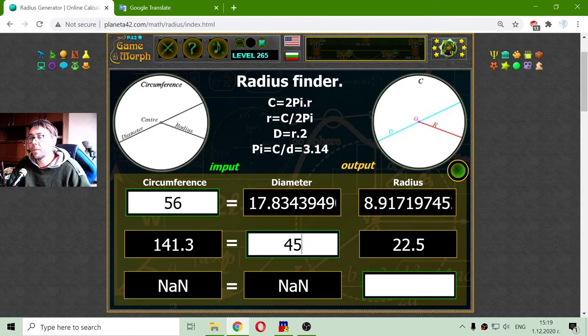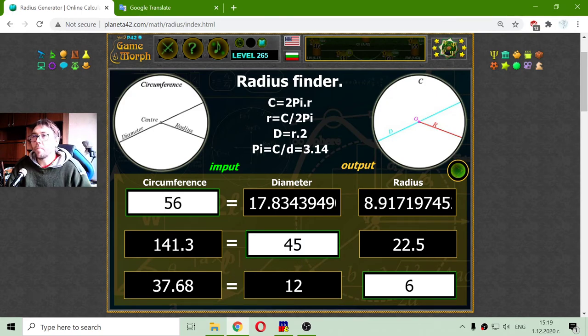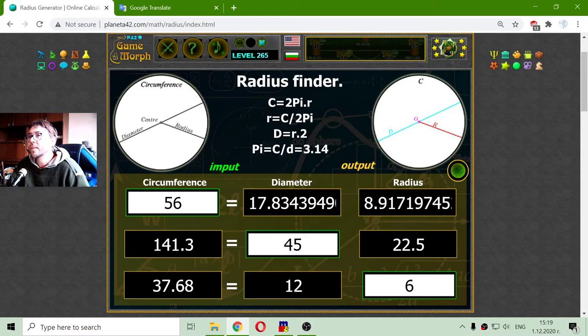And finally, if I have the radius, let's say radius of 6, the diameter should be 12 and the circumference should be 37.68. And those are the basic operations about finding radius of a circle.